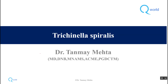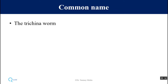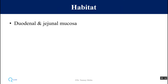Hello, today we're going to learn about a worm known as Trichinella spiralis. It belongs to the class Nematoda and the common name is Trichinella worm. Geographical distribution: it is common in Europe, United States, and Africa. It is not commonly seen in India. Habitat: it resides in the duodenum and jejunum mucosa, that is basically the small intestine.